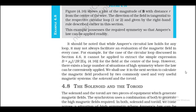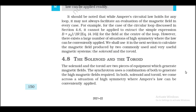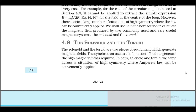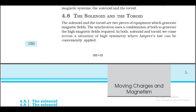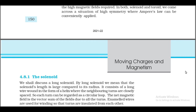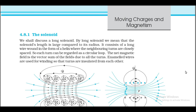Section 4.8: The Solenoid and the Toroid. The solenoid and the toroid are two pieces of equipment which generate magnetic fields. The synchrotron uses a combination of both to generate the high magnetic field required. In both solenoid and toroid we encounter high symmetry where Ampere's law can be conveniently applied. Section 4.8.1: The Solenoid. A long solenoid means the solenoid length is large compared to its radius. It consists of a long wire wound in the form of a helix where neighboring turns are closely spaced, so each turn can be regarded as a circular loop. The net magnetic field is the vector sum of the fields due to all turns.